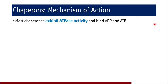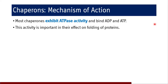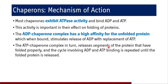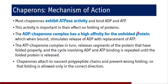Regarding the mechanism of chaperones: most chaperones exhibit ATPase activity — they bind both ADP and ATP, and this activity is important in the effective folding of proteins. The ADP-chaperone complex has a high affinity for the unfolded protein. When bound, it stimulates release of ADP with replacement by ATP. The complex in turn releases segments of the protein that have folded properly, and this cycle involving ADP and ATP binding is repeated until the properly folded protein is released.